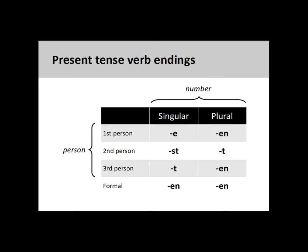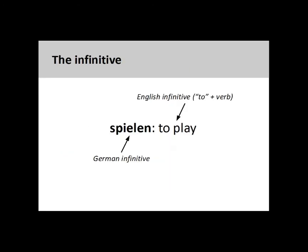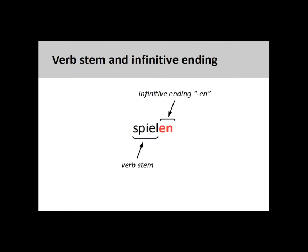As you see on the screen, German has a verb ending for each combination of number and person. It is very important to memorize these endings. To conjugate a verb in German, you begin with the infinitive form of the verb. This is the form that you will find in the dictionary. You will note that English uses 'to' with a verb to form the infinitive, but German does not do this. Instead, German has an infinitive ending which is attached to the verb stem to form the infinitive — here, the infinitive ending is attached to the verb stem to produce 'to play.'